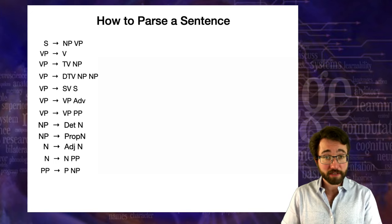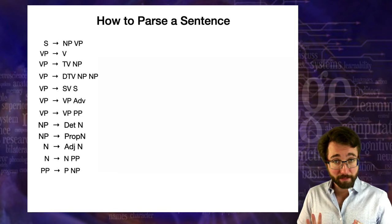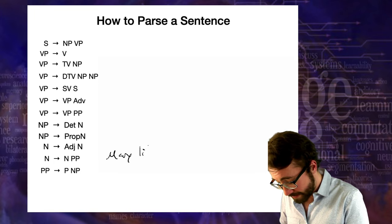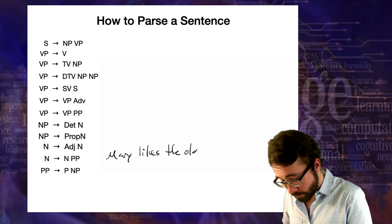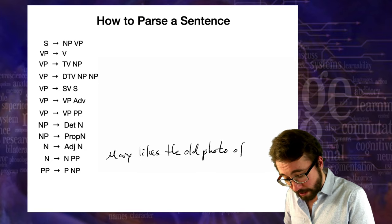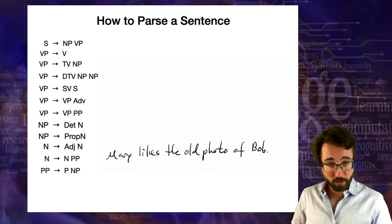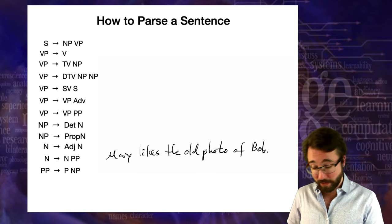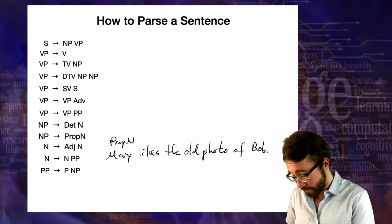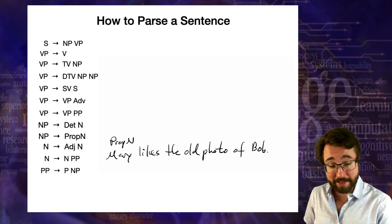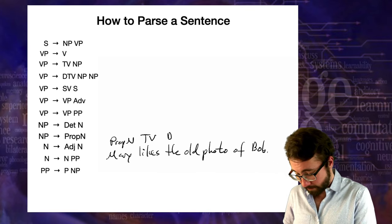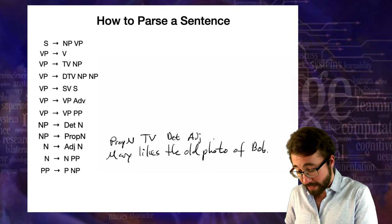We're going to do two more examples of parsing. Here's the first sentence: 'Mary likes the old photo of Bob.' First step: write out the syntactic categories for all the individual words. Mary is a proper name. 'Likes' is a transitive verb TV, because it takes an object. 'The' is a determiner. 'Old' is an adjective. 'Photo' is a noun. 'Of' is a preposition. 'Bob' is a proper name.